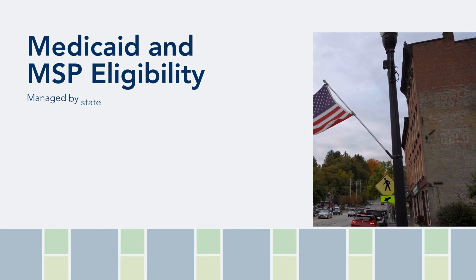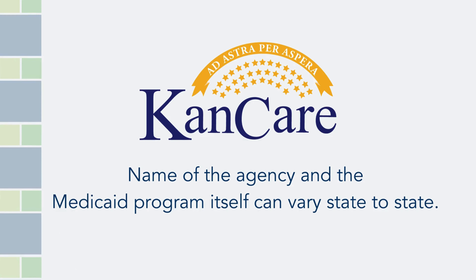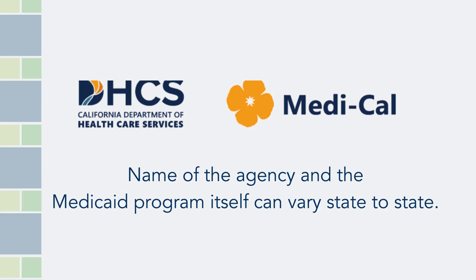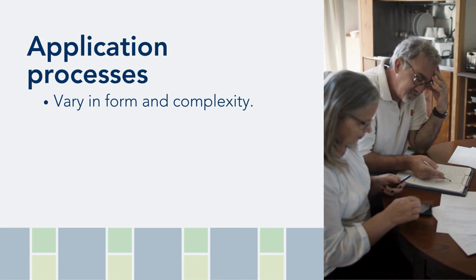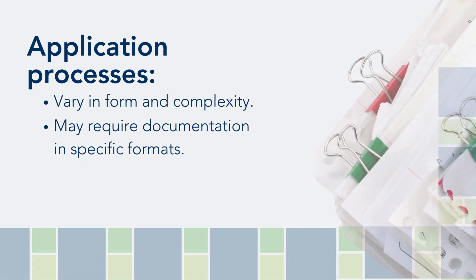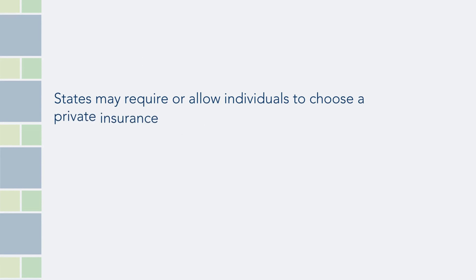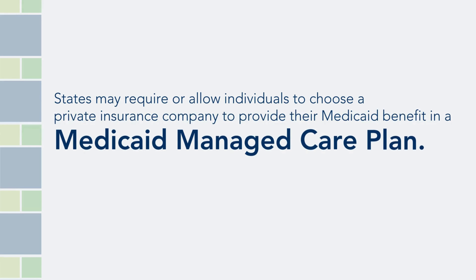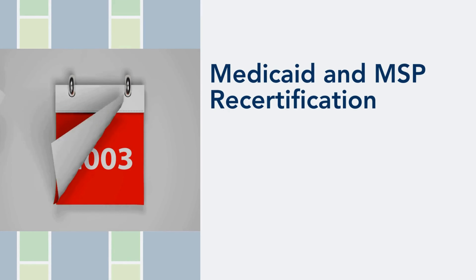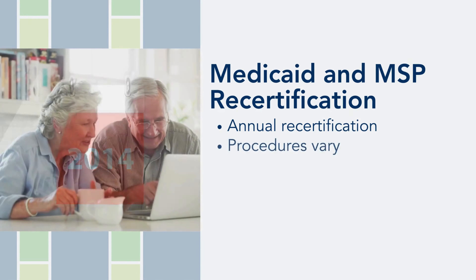Medicaid and Medicare Savings Program eligibility is managed by a state's Medicaid agency or another local office given this responsibility by state law. The name of the agency that handles these applications and the name of different Medicaid programs can vary from state to state. The applications can vary dramatically in form and complexity, and they can require people to submit documentation in specific formats, including originals or notarized copies. Some states require in-person interviews as part of the application process. Additionally, some states require or allow people with Medicaid to choose a private insurance company to provide their Medicaid benefit through a Medicaid-managed care plan. Medicaid and Medicare savings programs require annual recertification to maintain enrollment in the benefit. Recertification procedures vary, from essentially requiring reapplication with updated documentation to more streamlined processes.